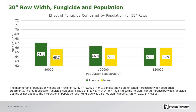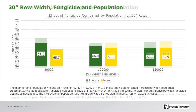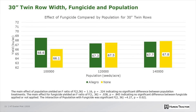This is the same style of graph but looking at 30-inch row width. The populations are also different along the x-axis; however, the take-home message is still the same — across these population treatments there was not a statistically significant yield benefit to the fungicide application.